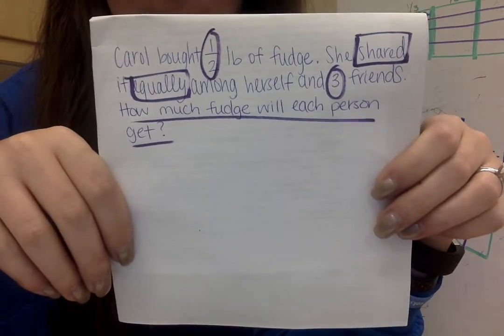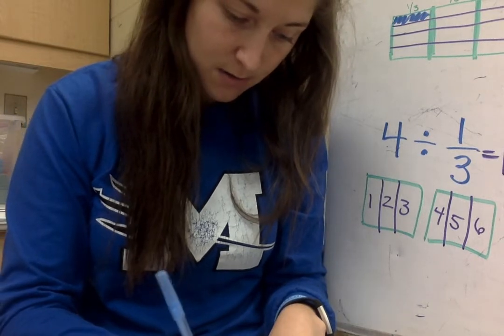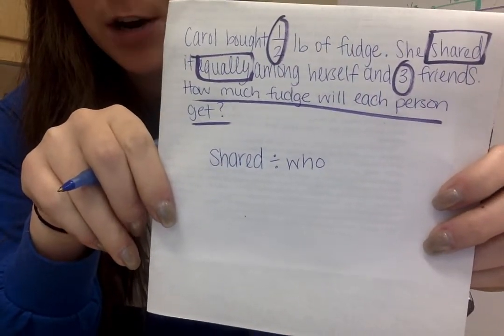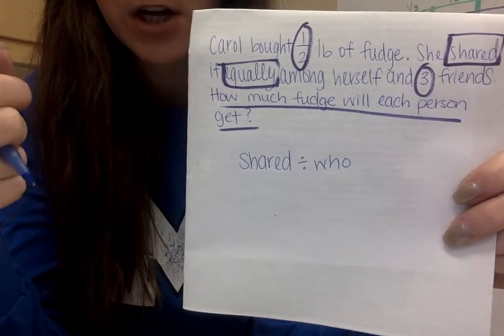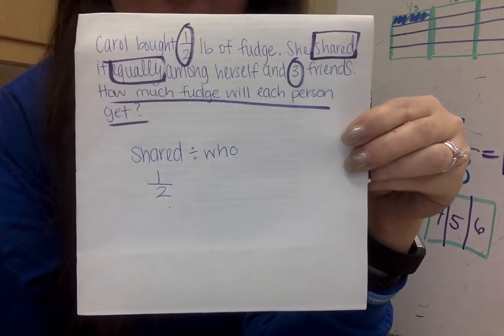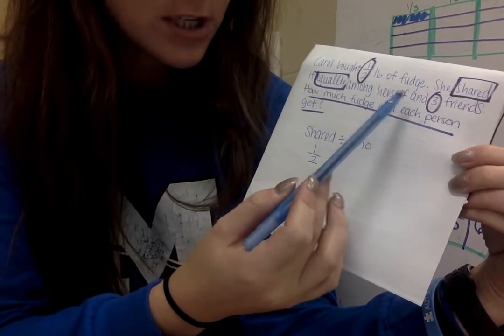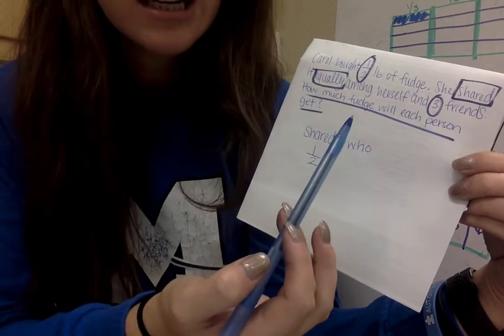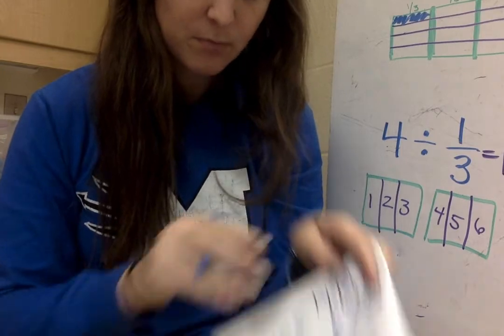I need to figure out the setup of my problem. I know I have to do the amount shared divided by who. What is being shared? Fudge — I'm sharing a half pound of fudge, so that's one half. Now I'm dividing that one half by what? She shared it equally among herself and three friends, which is actually a total of four people. So the problem is one half divided by four.